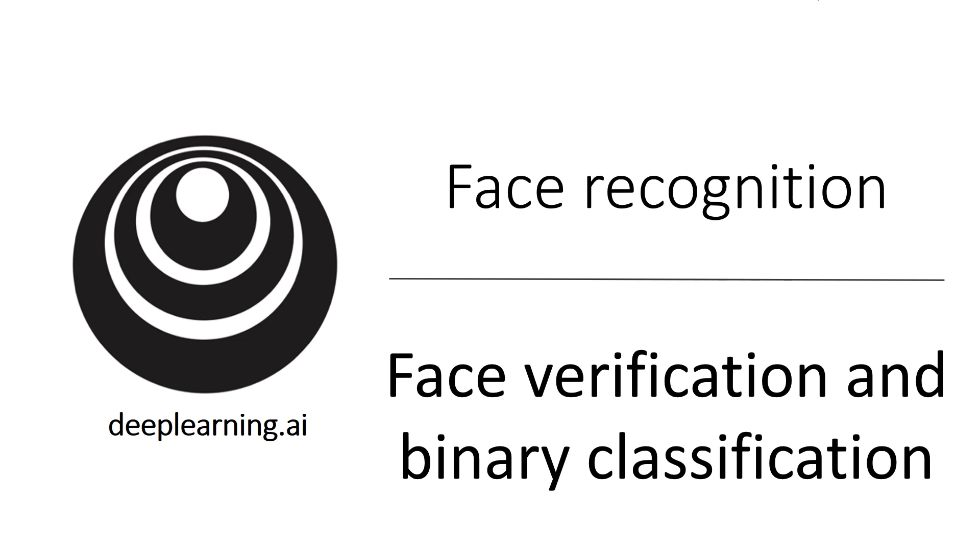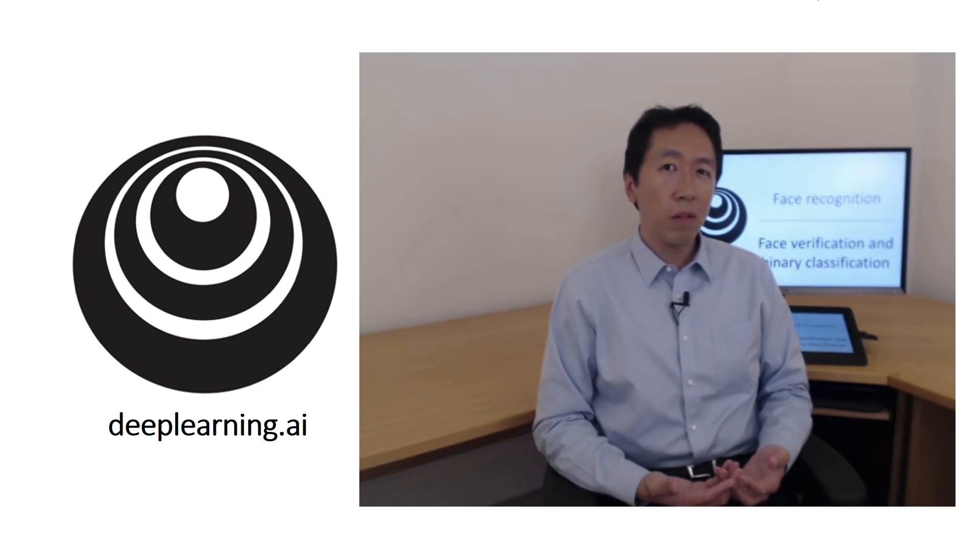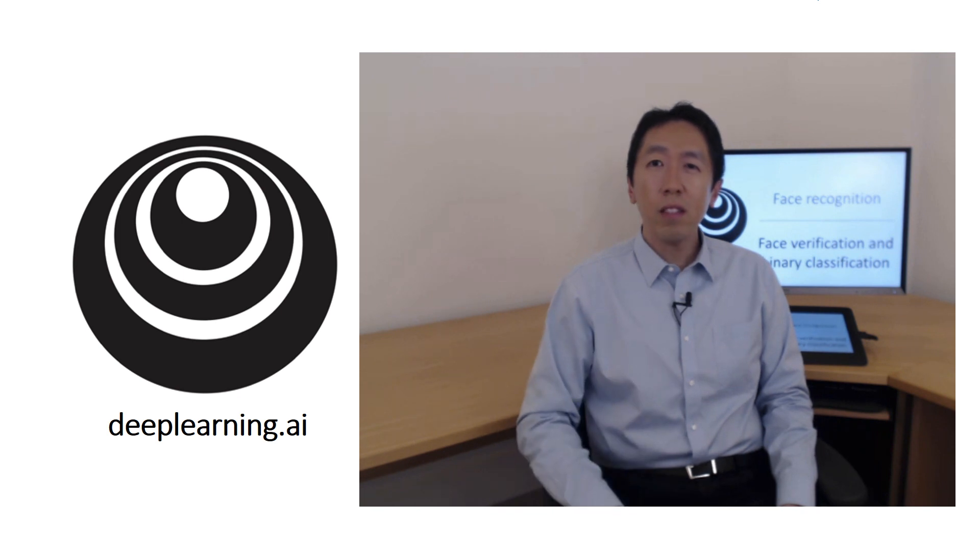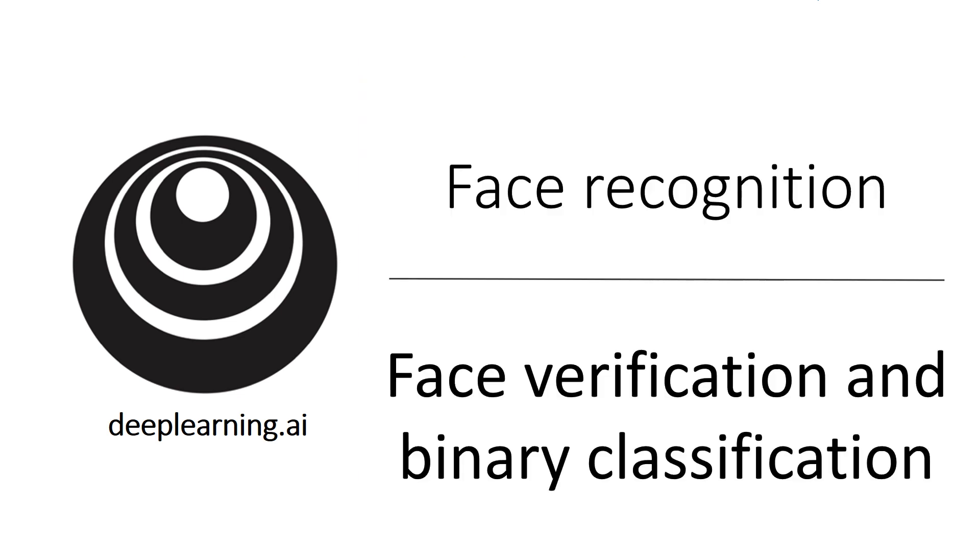The triplet loss is one good way to learn the parameters of a convolutional net for face recognition. There's another way to learn these parameters. Let me show you how face recognition can also be posed as a straight binary classification problem.